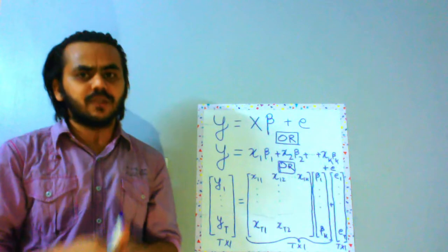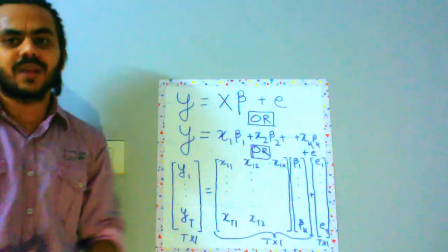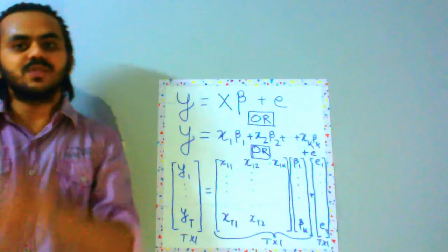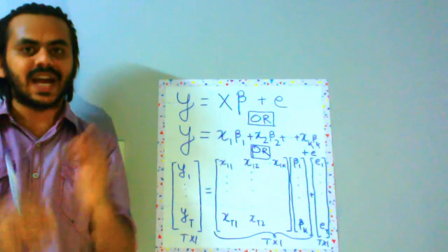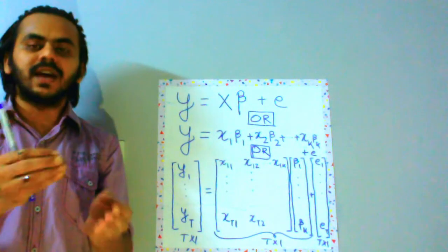In the next lecture, we will be moving on to finding the estimation for beta. How do we get the value of beta? As we have done it for b, when we had y is equal to a plus bx plus e, we estimated b and we also estimated a.